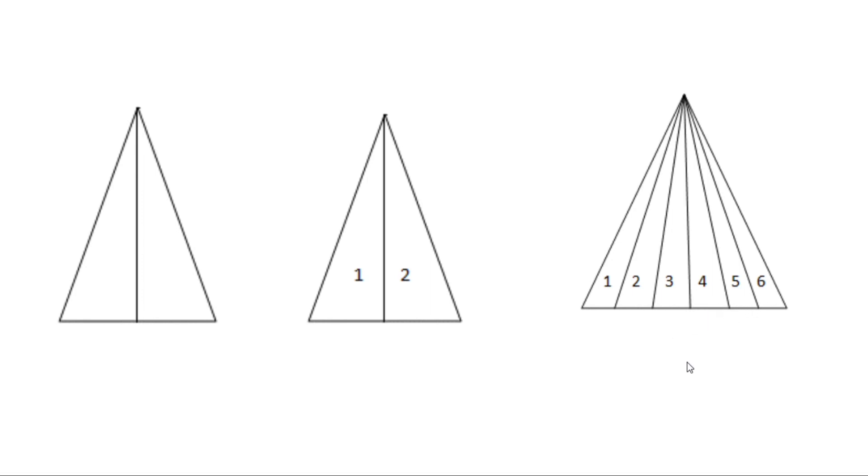To find the number of triangles, what we have to do is just add one to six, that's going to be seven, and we have to multiply six by seven and divide it by two. So the answer is going to be 21.